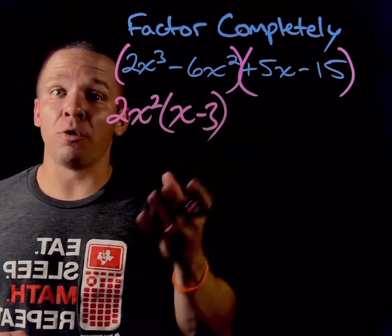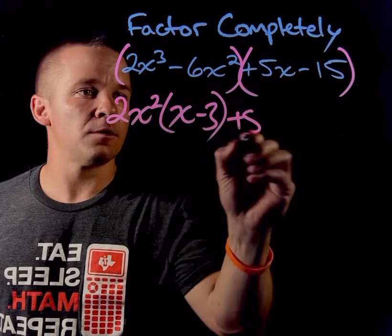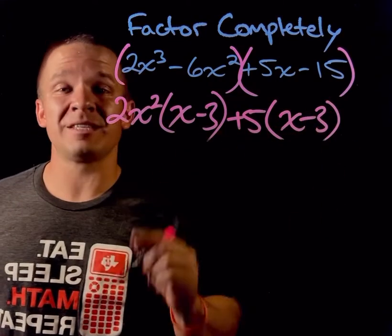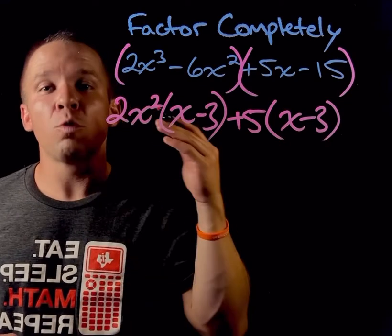Then for the other one, what can I take out of both of those terms? Well, I can take out a 5. And then I'm going to be left with x minus 3. Those two should always be the same if you're doing factor by grouping correctly.